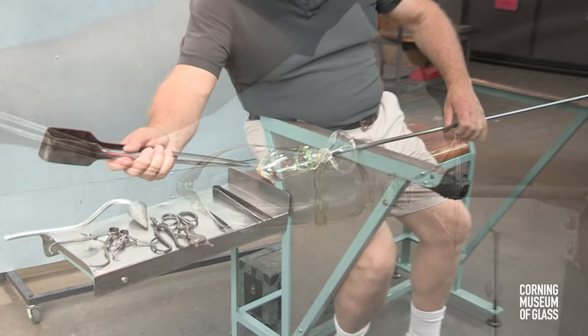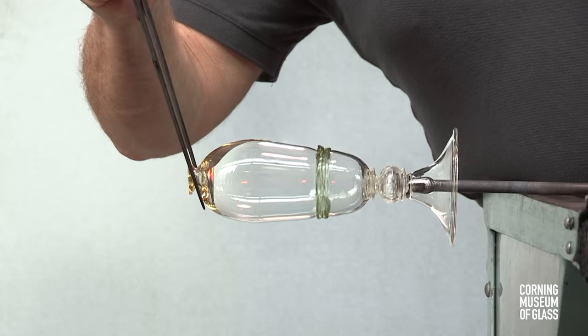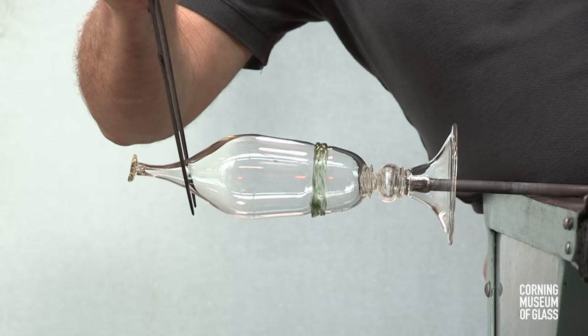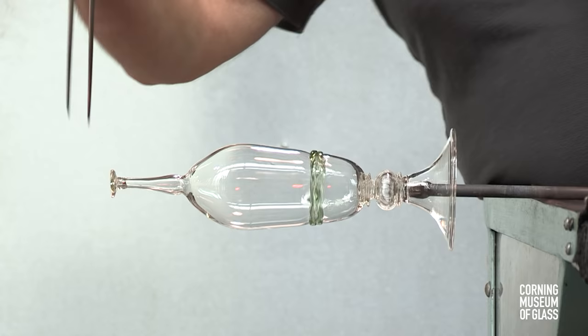The edge is reheated. The original goblet has a very thin edge. To create that, a special lip thinning procedure is used. At this moment, the thick glass is pulled out, a new constriction made, and the thick glass knocked off.